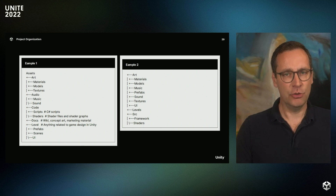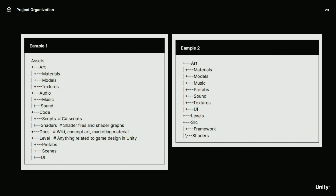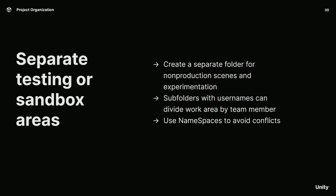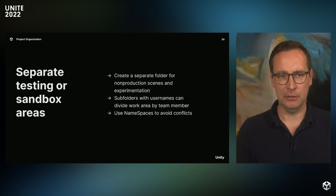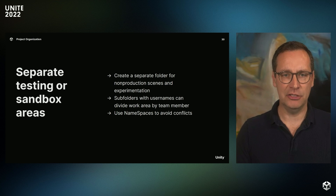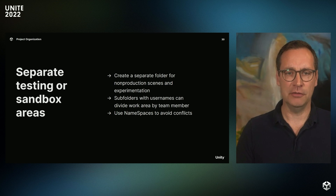There is no right way to organize your folder structure, but a common approach we often recommend is organizing project folders by asset type. There are many reasons why this is a popular practice for Unity games — the main reason is simply that it scales well as a project grows. Another tip to consider is creating a separate folder for non-production scenes and testing, so it's much easier to differentiate between what was created for testing purposes and what will make it into the final production. You can add more subfolders with usernames in certain areas to ensure a clean separation of files across different test areas.